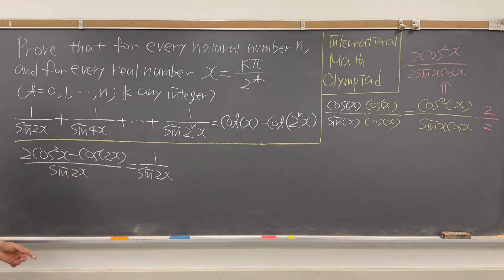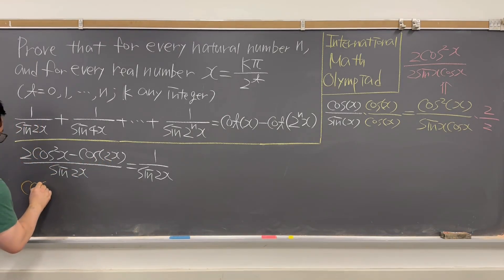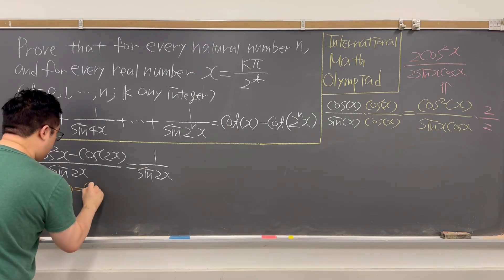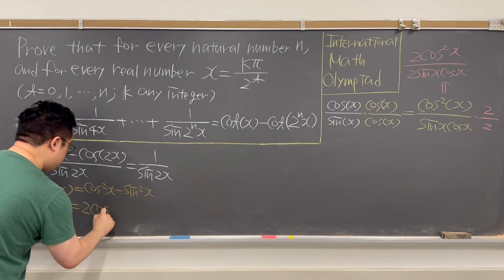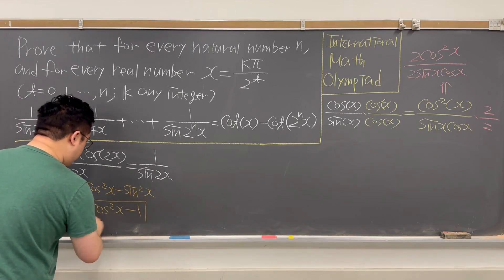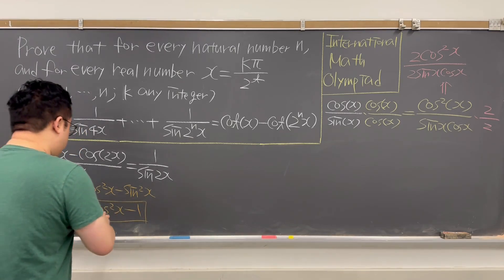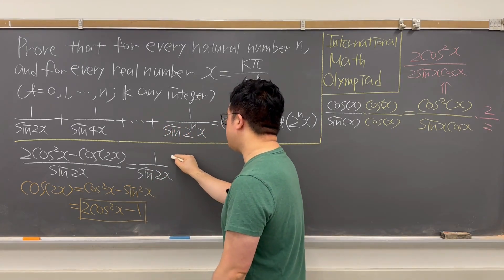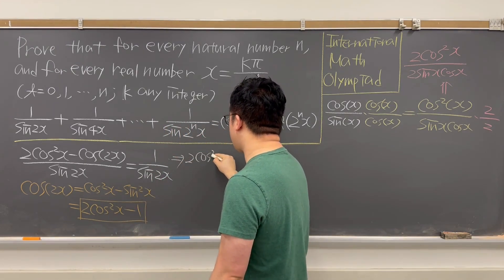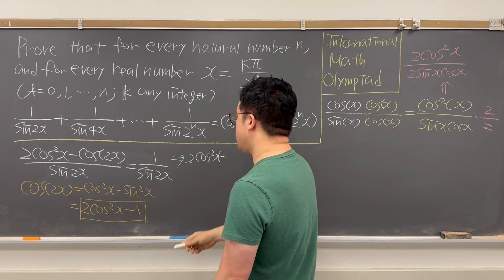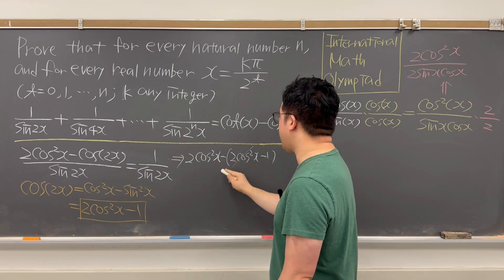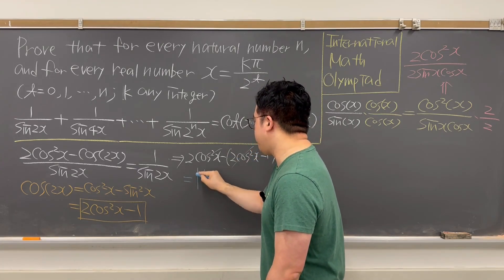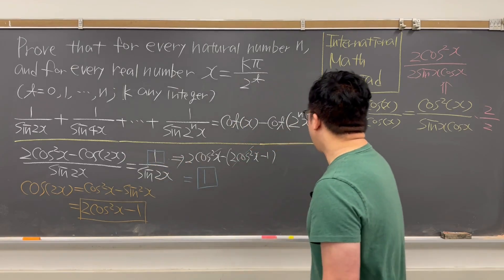We can verify by focusing on the numerator. We have the double-angle formula for cosine: cos(2x) equals 2·cos²(x) minus 1. Substituting into the numerator gives 2·cos²(x) minus (2·cos²(x) minus 1), which simplifies to just 1. So the numerator equals 1, confirming that cotangent x minus cotangent(2x) equals 1 over sin(2x).